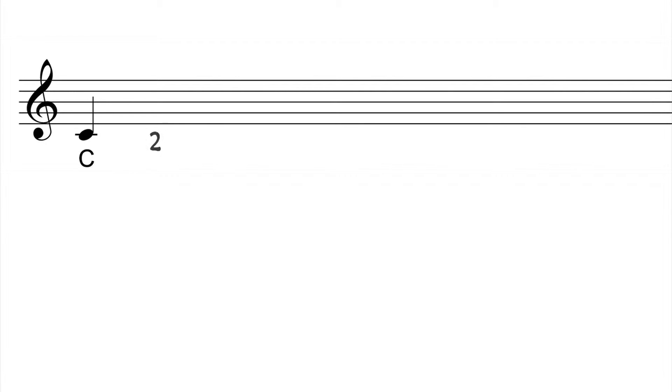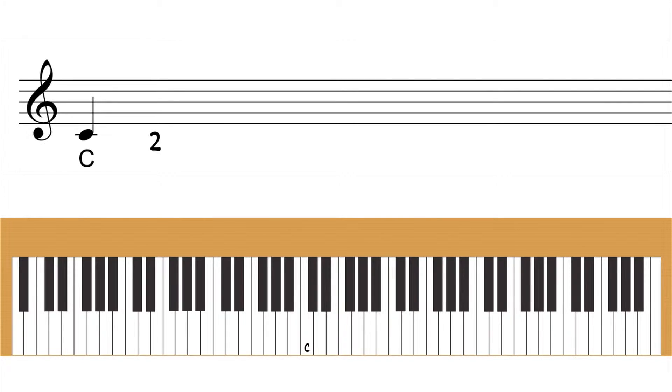What kind of D is two half steps above C? Now you go to your keyboard, you put your finger on C, you count up two half steps, one, two, and tell me what kind of D is that. What is it? D natural. D natural.